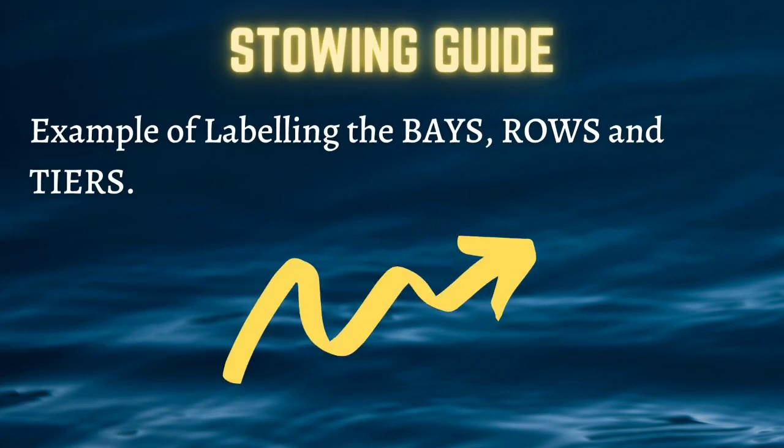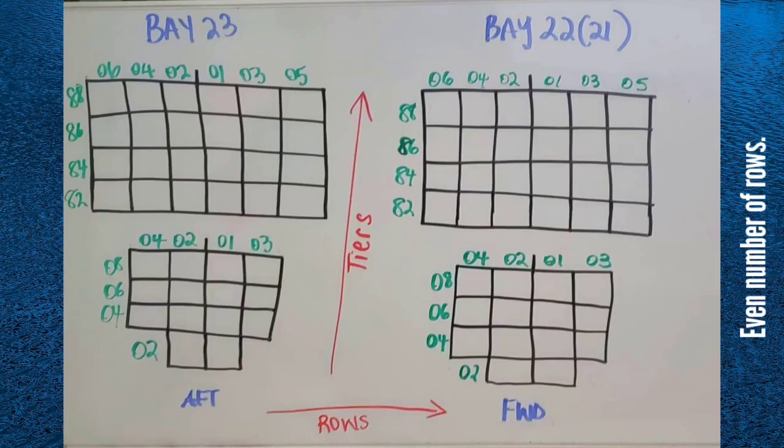Here is an example of labeling the base, rows, and tiers. I have taken the time to do one with an even number of rows and one with an odd number of rows, so please take the time to observe both illustrations.